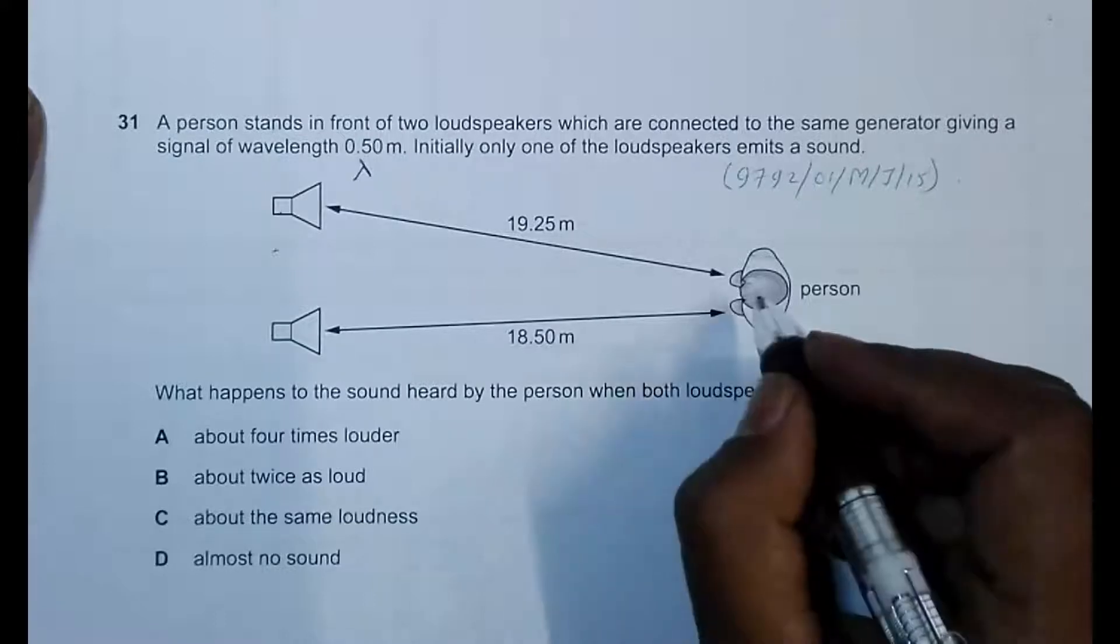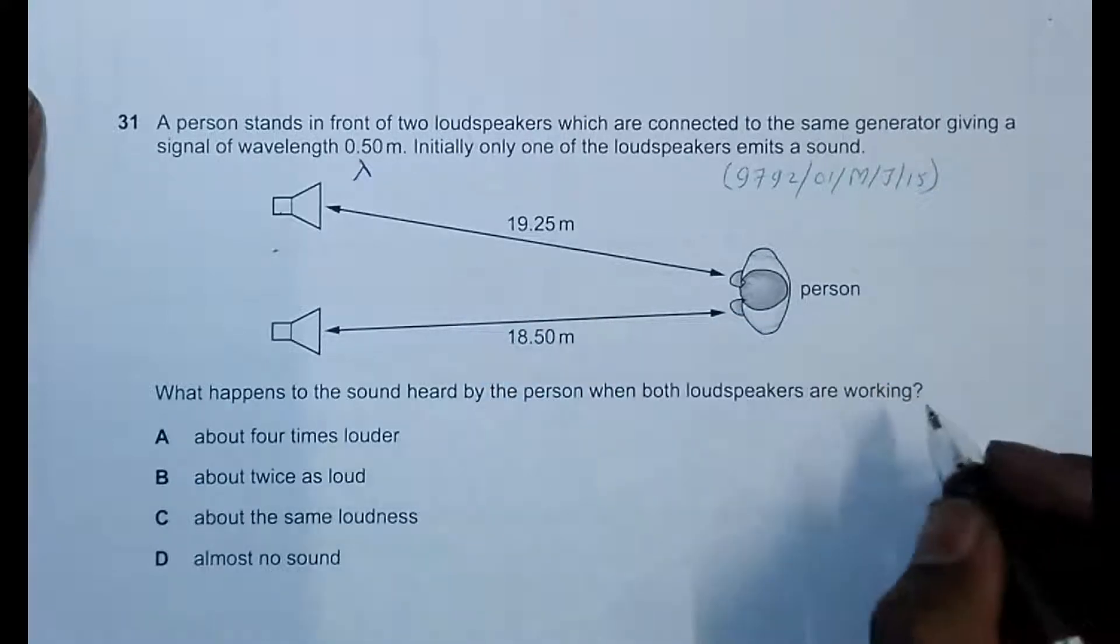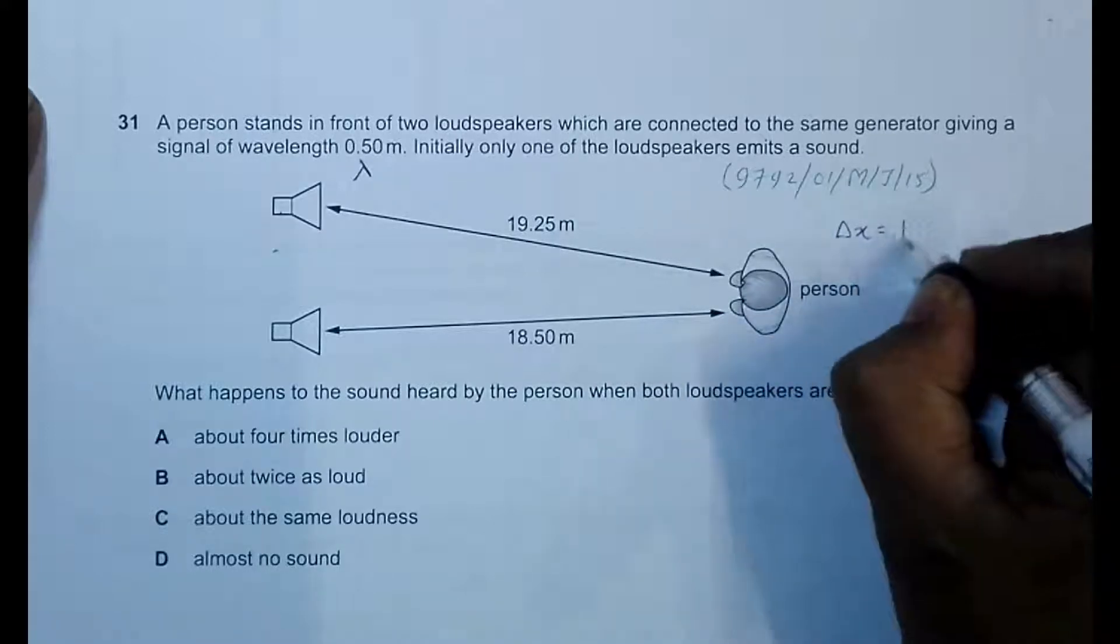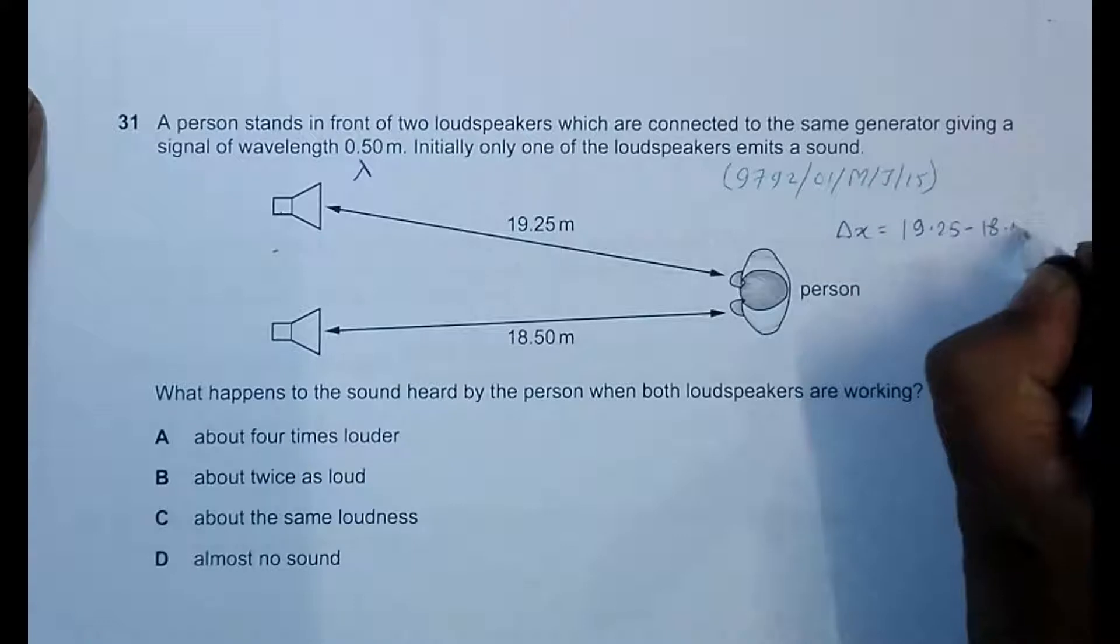What happens to the person's ears when the waves reach the person's ear? We have to find the path difference here. So the path difference delta x should be equal to 19.25 minus 18.50.